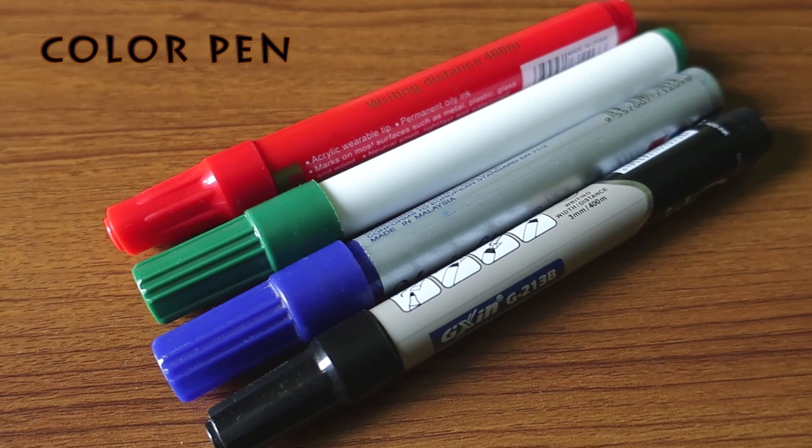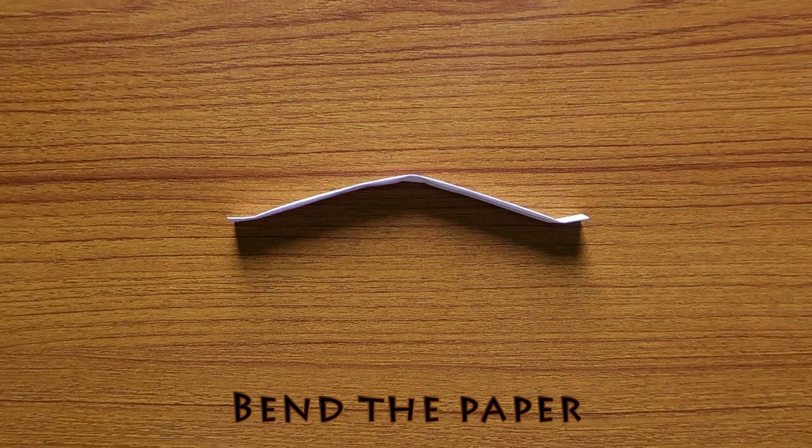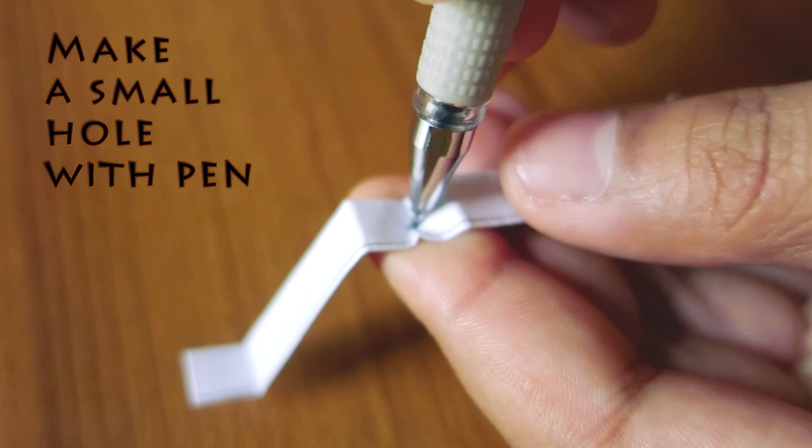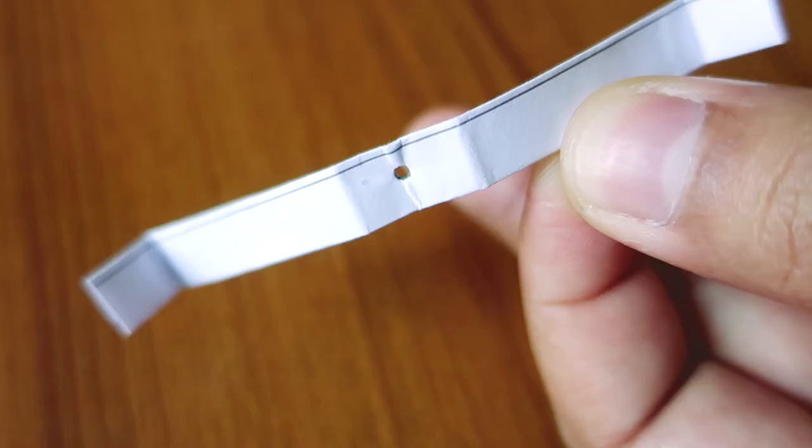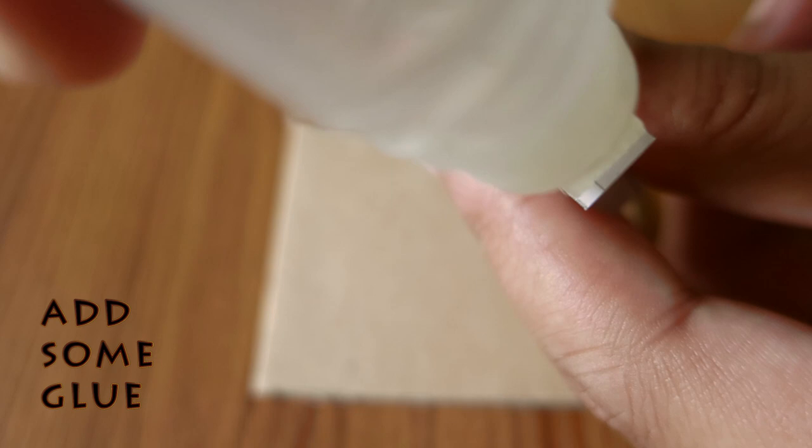How to make? First take the rectangular paper and fold it. Add some glue to lock the edges. Bend the paper like a stand. Make a small hole with pen. Add some glue. Place the stand on cardboard.